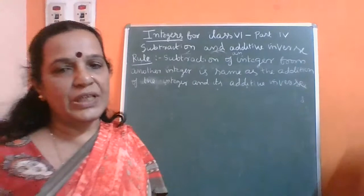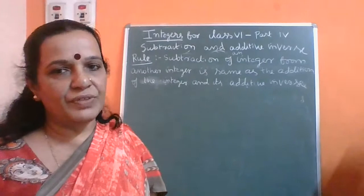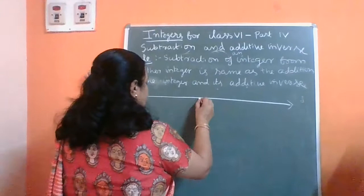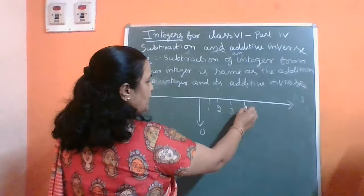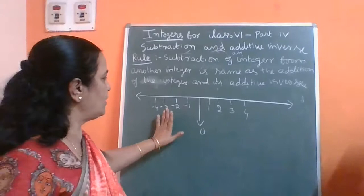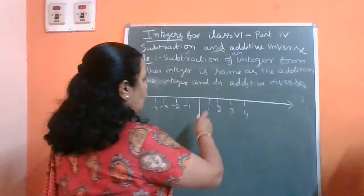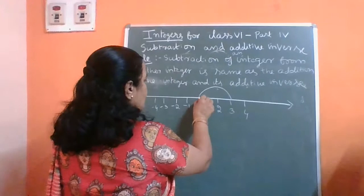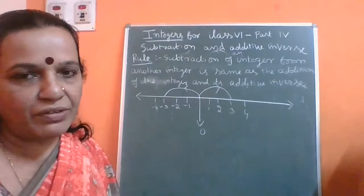Now first we are going to learn about additive inverse. On the number line, zero comes in between — all the positive numbers come towards the right side and all the negative numbers come towards the left side. If we consider minus 3 and 3, the distance from 0 to 3 is the same as the distance from 0 to minus 3, but they are in opposite directions.